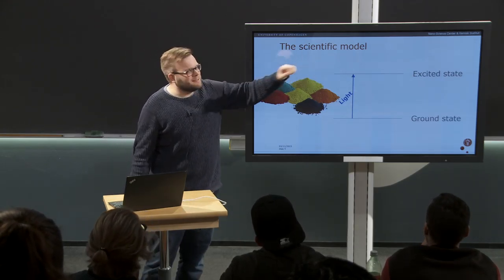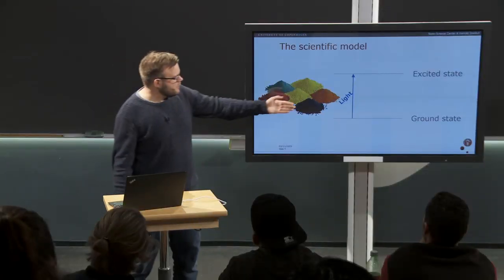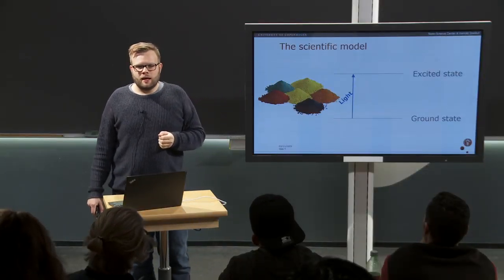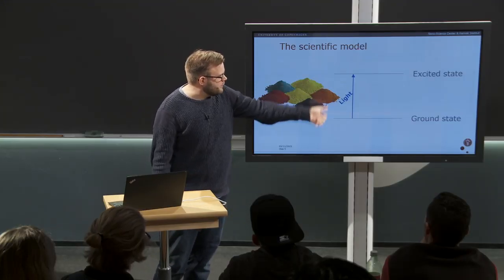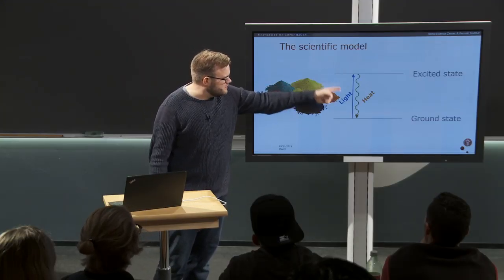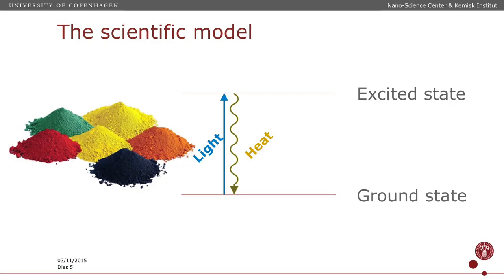A molecule in an excited state has too much energy — it wants to dissipate this energy, and something has to happen. If we think about our black car, the process that occurs is dissipation of energy as heat. So most normal dyes, when absorbing a photon, will immediately convert the excess energy to heat.